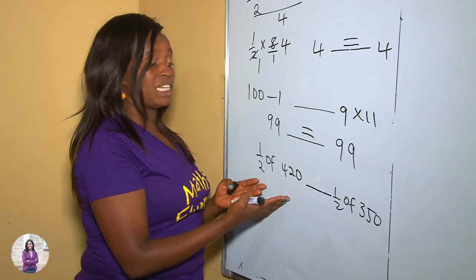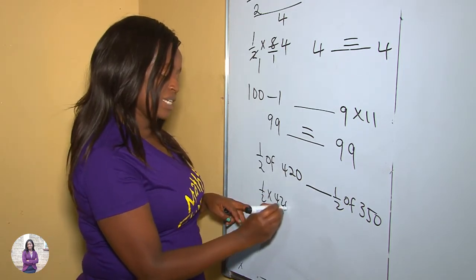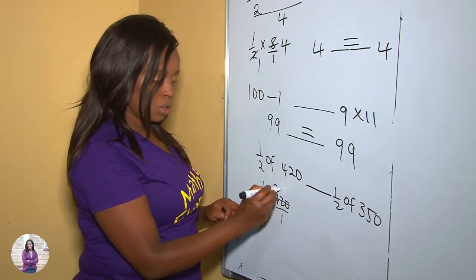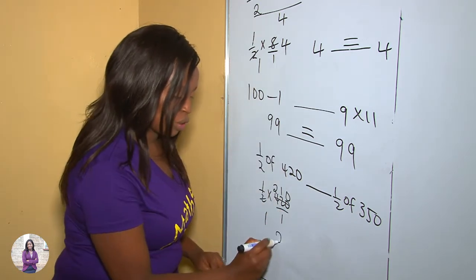So let's start by solving whatever is on the left, which is a half multiplied by 420, all this is over 1, so by 2, 1 by 2 is 2, 1, 0. So on the left we get 210. Our dash remains there.